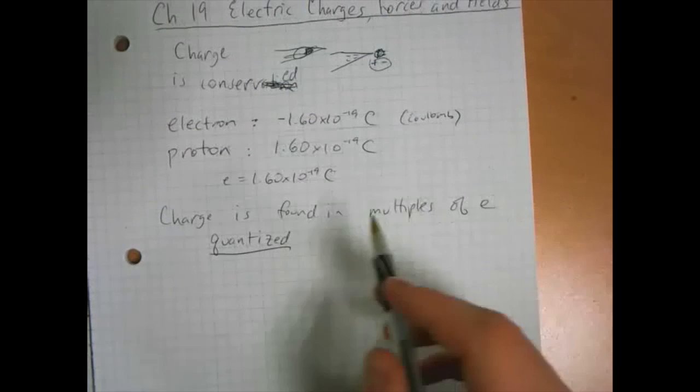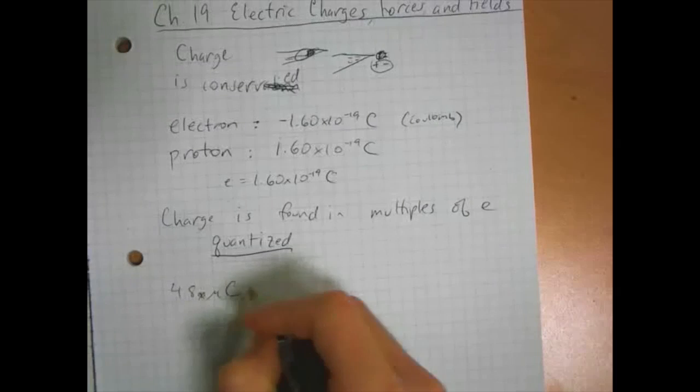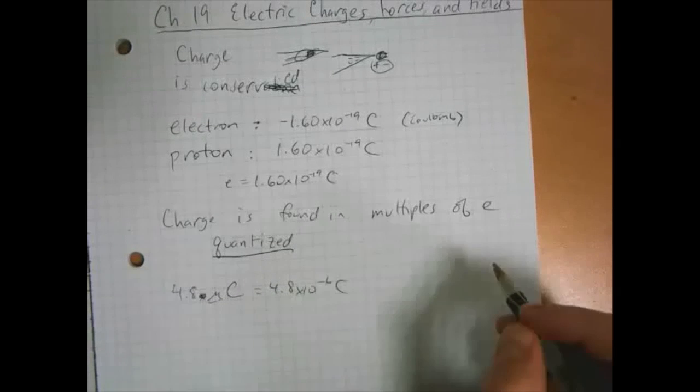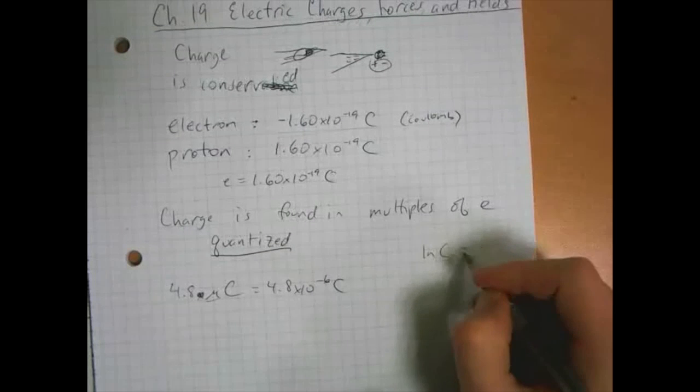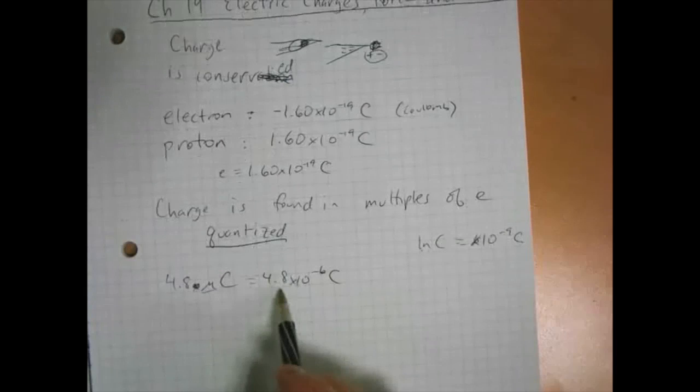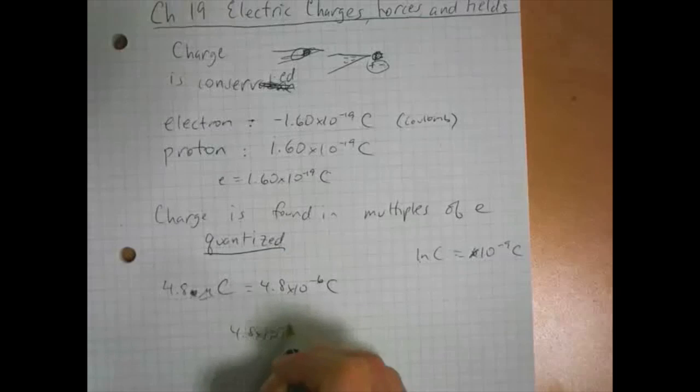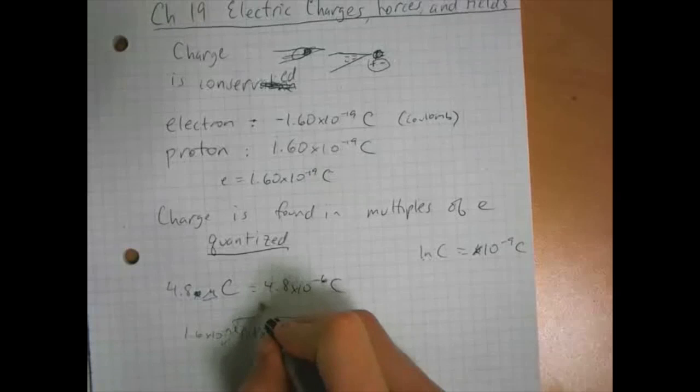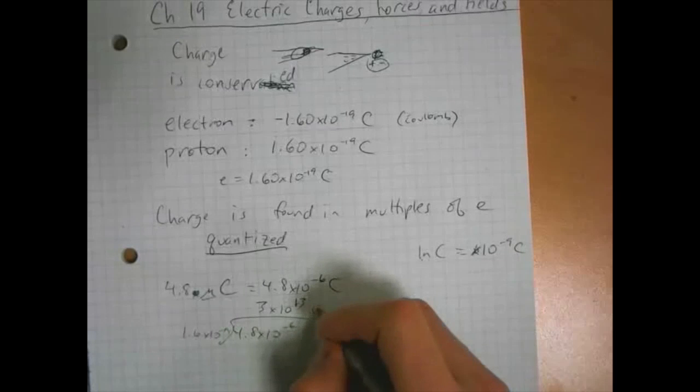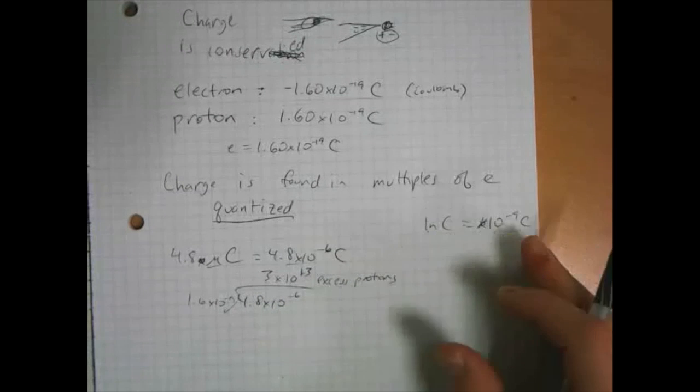So if something has a charge of 4.8 micro coulombs, micro is a prefix that you'll see a lot in this chapter. Micro means 10 to the minus 6. Also for the record, nano will show up, that's 10 to the minus 9. So if you have 4.8 times 10 to the minus 6 coulombs and the question is how many electrons is it missing, you just take whatever charge you have and divide by the electron charge. So that's gonna be 3 times 10 to the 13th. So there are 3 times 10 to the 13th excess protons in this charge. Some of the problems you'll be doing will involve that.